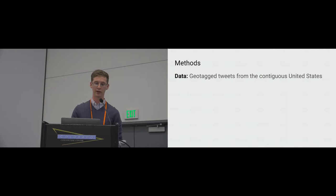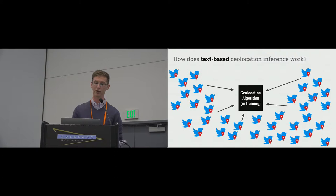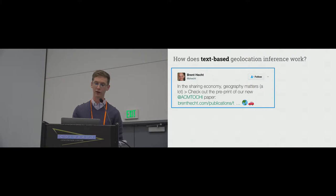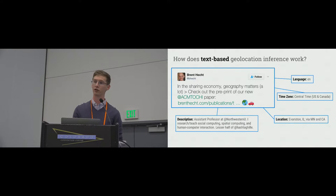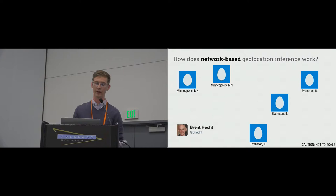For data, we used geotagged tweets from the contiguous United States. There are two different types of geolocation algorithms we implemented. The first is text-based geolocation: you teach the algorithm to associate the words in tweets with the location from where they came — so each word in the tweet, the metadata, the user's self-description, language, time zone, and self-reported location. We built on a well-regarded open source implementation developed by Reid Predorsky and colleagues. Open source was very important for being able to control the different aspects of the algorithm that we needed for this study.